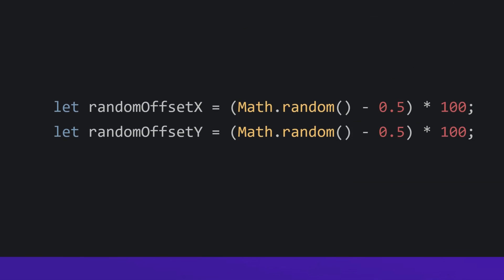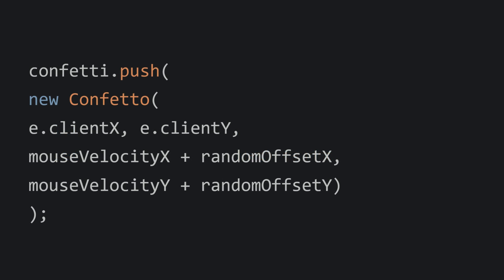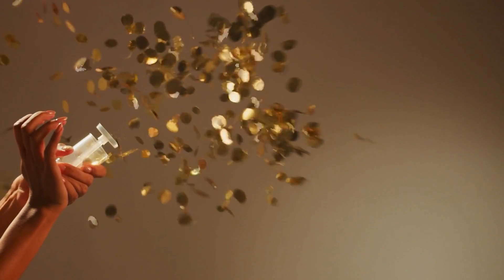We are not just using the raw velocity here — we add a bit of randomness to make our confetti spread out more naturally, as if they are tossed in the air. This randomness is achieved by adding a random offset to the mouse velocity, giving each piece of confetti its own little push as it comes to life. Next, we create a new confetto object at the current mouse position using the calculated velocity. This is what creates the effect of confetti bursting out from where the mouse moves.